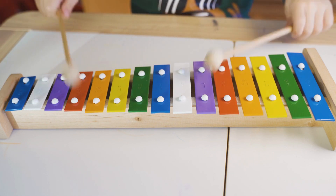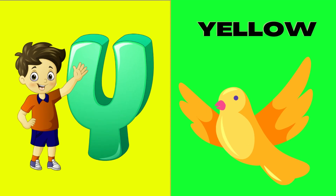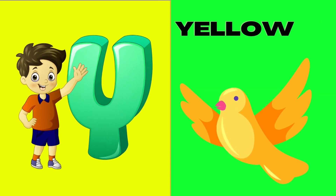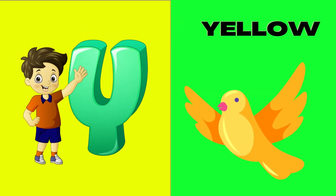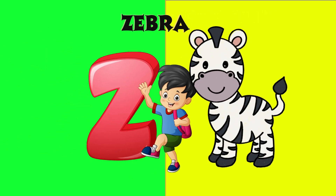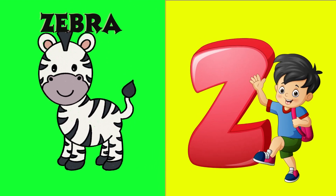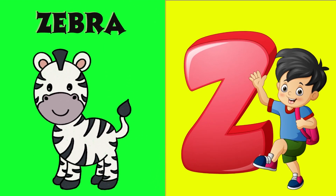Y is for yellow, y-y-yellow. Z is for zebra, z-z-zebra.